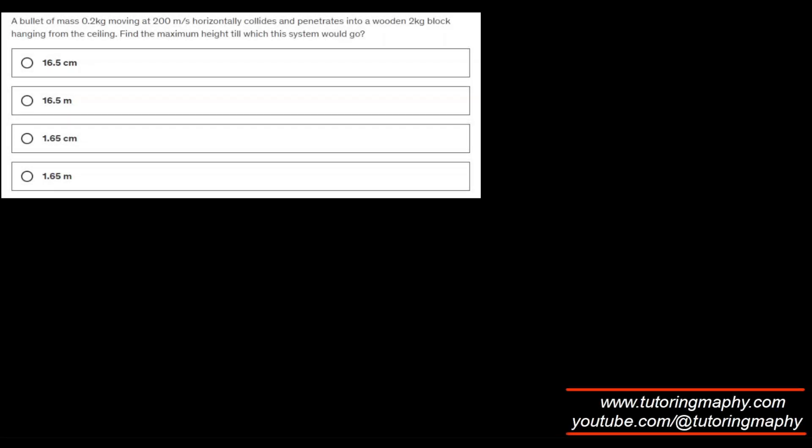This question asks: a bullet of mass 0.2 kilogram moving at 200 meters per second horizontally collides and penetrates into a wooden block, a two kilogram block hanging from the ceiling. Find the maximum height to which the system would go.